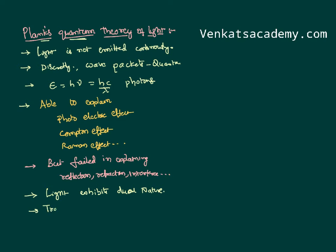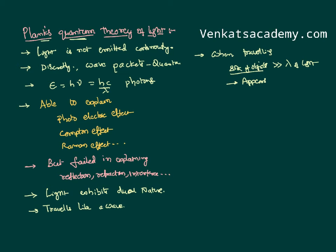Light travels like a wave. When it is traveling as a wave and interacting with objects, if the size of the objects is much bigger than the wavelength of light, the size dominates and light appears to travel in straight lines, exhibiting properties like reflection and refraction. If the size of the objects is close to the wavelength of light, it appears as a wave and exhibits properties like interference, diffraction, and polarization.